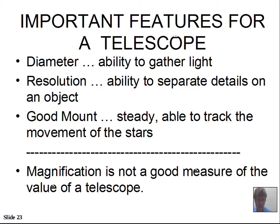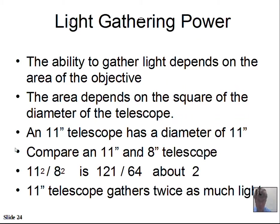We're going to talk about some calculations that can be done to characterize a telescope — and for my students, if you have a lab in my course, we may run across some of this in lab as well. The light-gathering power is the most important power of the telescope. The area of the objective gives us the light-collecting ability, so it's not just the diameter — we need an area, and the area depends on the square of the diameter.